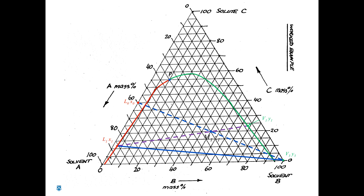Reading all the way across, we know this point here is our final raffinate. We can construct a tie line that links that point with its corresponding extract on the other side, and the point where they cross will be Z2. The composition X2 was given in the problem statement, and we can read that line off directly from our partition information on our XY graph to get this intersection, and then read off the value of Z2.